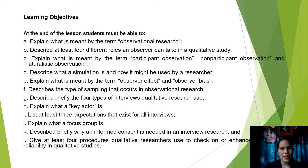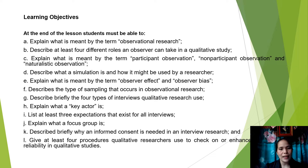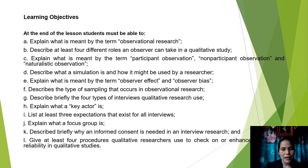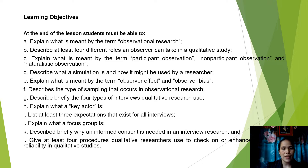F. Describe the type of sampling that occurs in observational research. G. Describe briefly the four types of interviews qualitative research uses. H. Explain what a key actor is. I. List at least three expectations that exist for all interviews. J. Explain what a focus group is. K. Describe briefly why informed consent is needed in interview research. And L. Give at least four procedures qualitative researchers use to check on or enhance validity and reliability in qualitative studies.